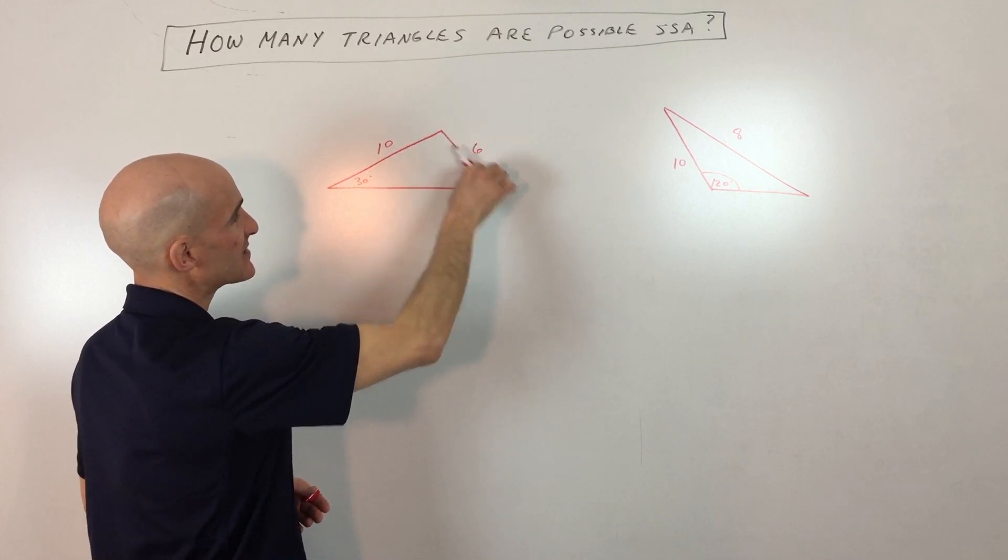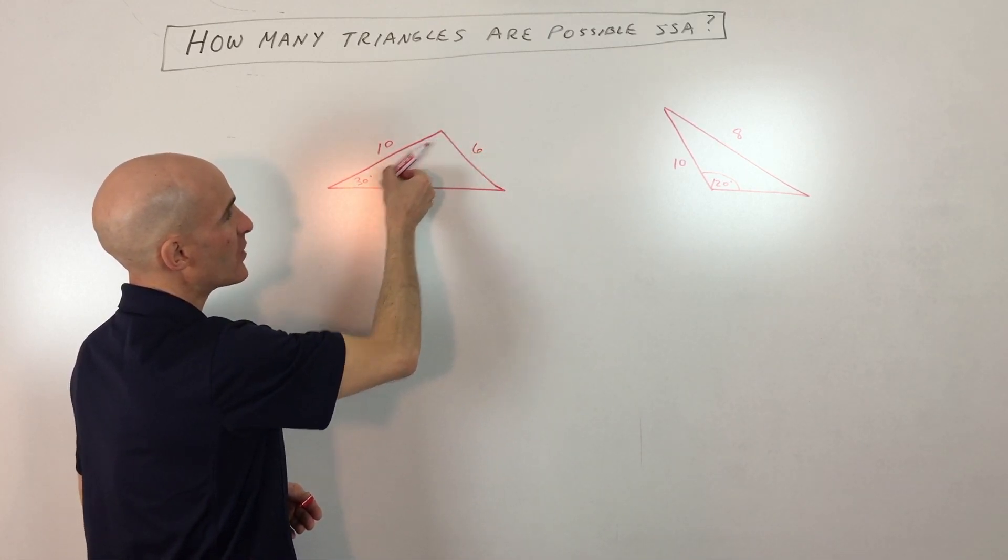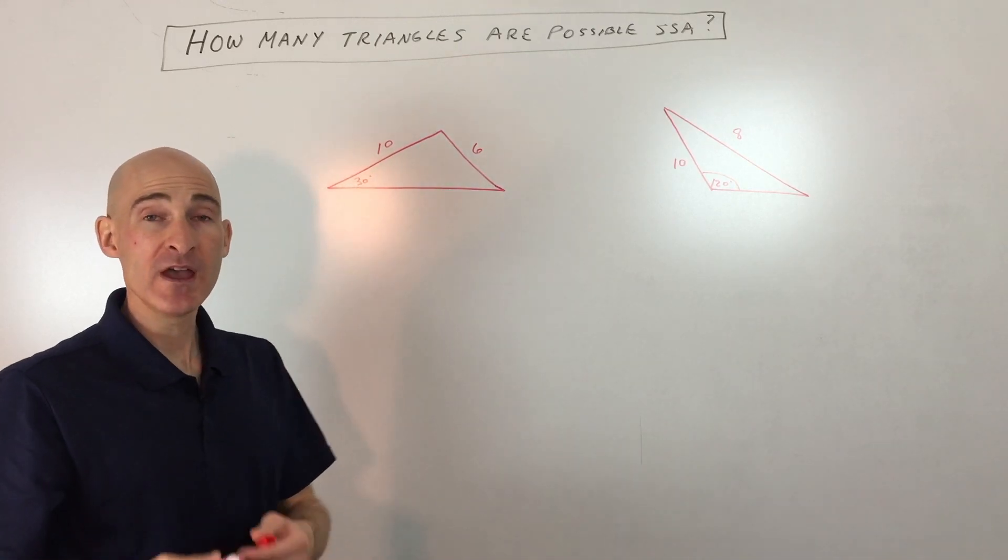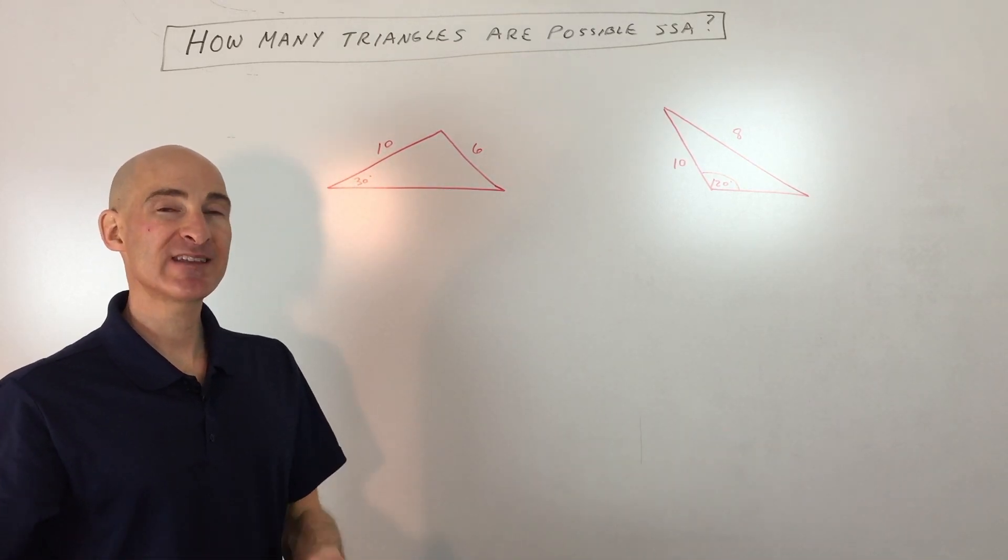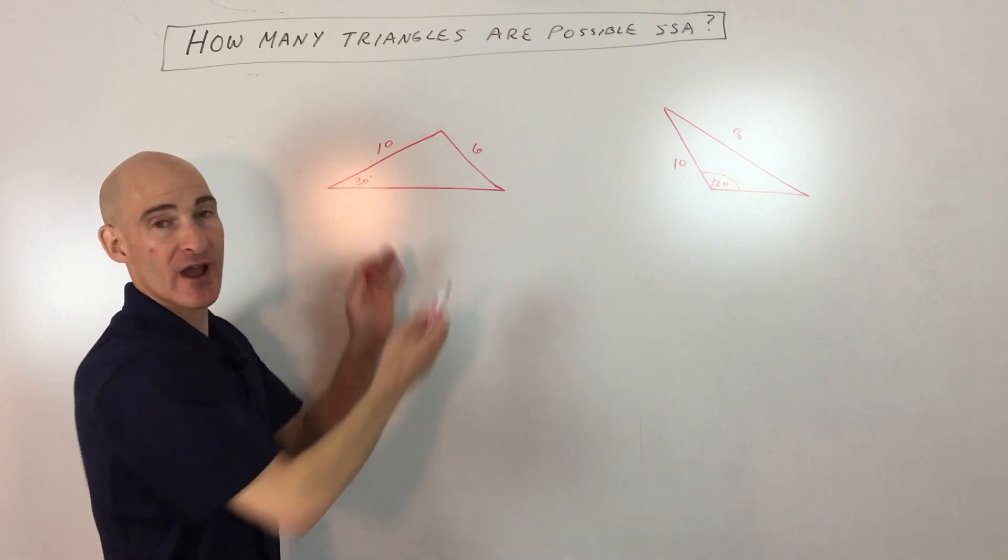rotate this side. See this side? We could rotate it in such a way that maybe another triangle could be formed. They're just giving us the information, but not necessarily telling us how to draw or construct the triangle.